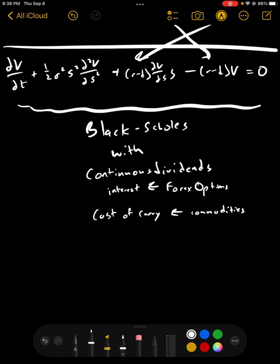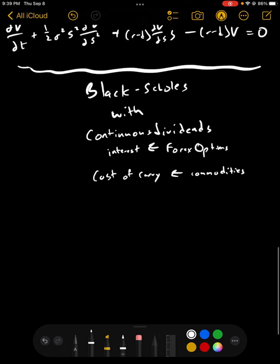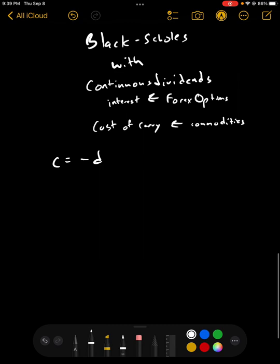Now, with the cost of carry, it's a cost. You're not getting paid it. You're paying it. So, instead of it being minus d, you're going to end up with plus. So, let's say that c equals negative d. So, this is the cost that you're paying. So, in that case, Black-Scholes ends up being the derivative of V with respect to t plus one-half sigma squared s squared second derivative of V with respect to s.